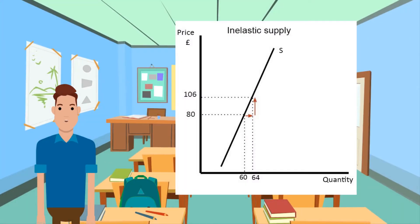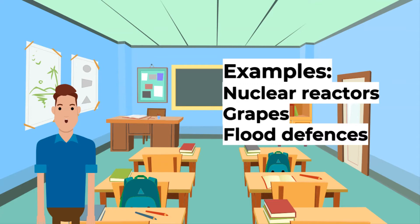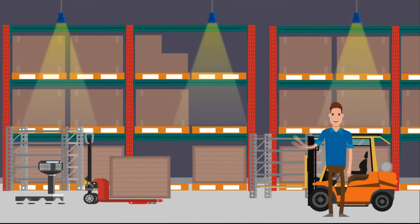In this example of inelastic supply, a 32% increase in price has led to only a 7% increase in quantity. The PES in this case is 0.2. Examples of these types of goods are nuclear reactors, grapes, and flood defences. This is because of the time taken to increase supply — PES in the short term is said to be inelastic.